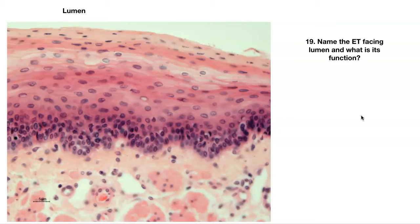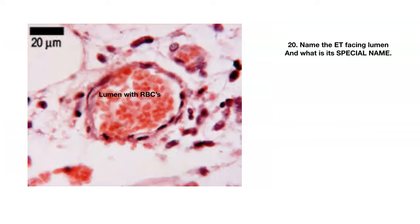Number twenty. This is kind of a blurry slide — I wish I was in the classroom to get a better picture — but name the epithelial tissue facing the lumen. Here I'm showing you a lumen that's filled with red blood cells. Name that type of epithelial tissue facing this lumen and what's its special name that we give it?